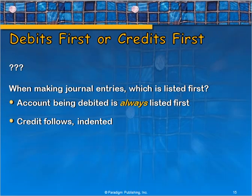So there's a format for making journal entries. You might be wondering: debits or credits, which comes first? When we record journal entries, the account being debited is always listed first on the first line. And then we follow it with the credit account, and the credit account is always indented to the right.